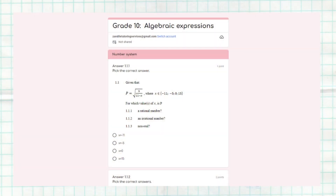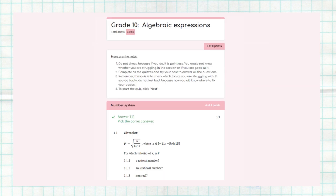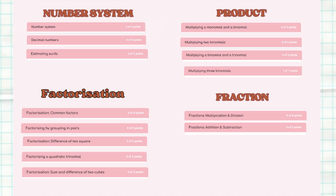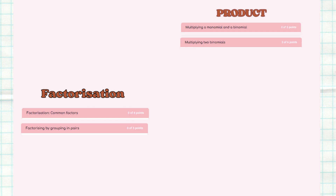You do your quiz, and after doing it you get your results. I've split the results into sections — number system, product, factorization, and fractions — and you can see which topics you're having problems with. From this example, the problem areas are binomials, products, and factorization.